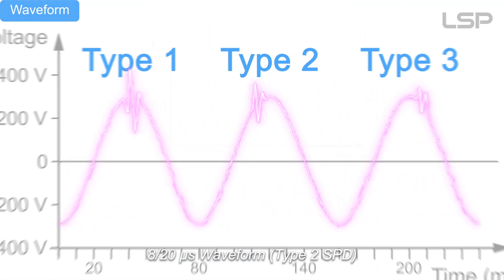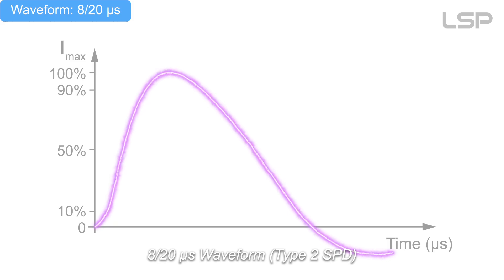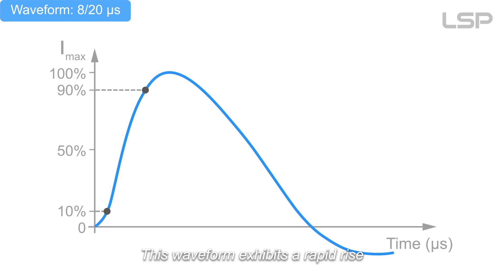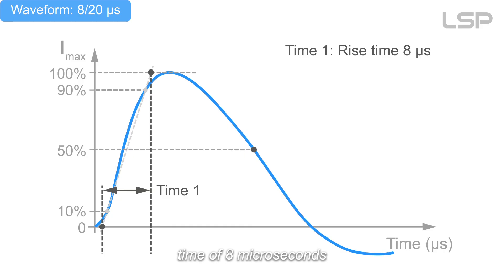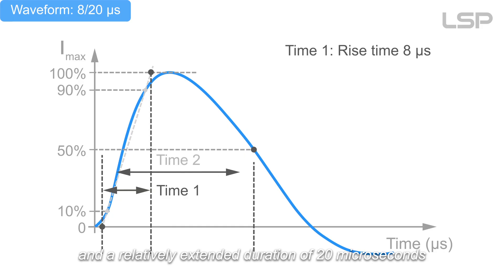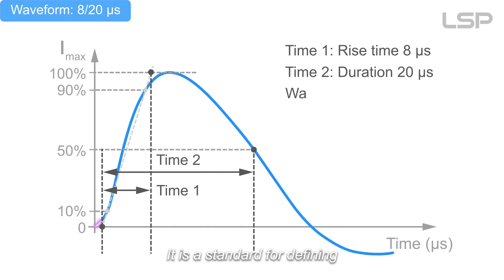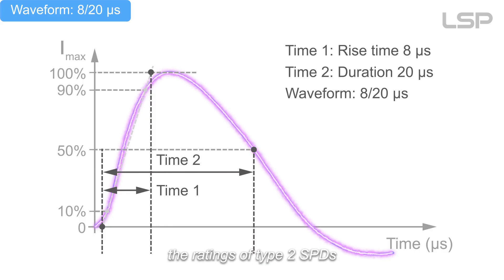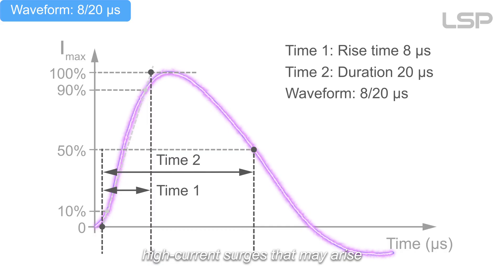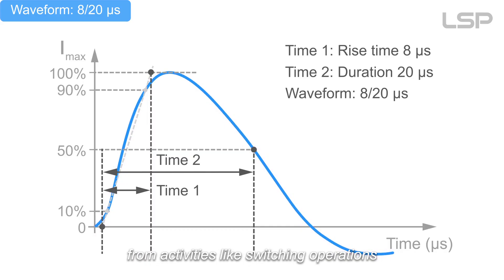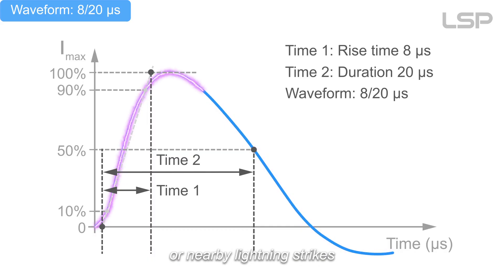The 8/20 microsecond waveform is the standard for Type 2 SPDs. This waveform exhibits a rapid rise time of 8 microseconds and a relatively extended duration of 20 microseconds, and is a standard for defining the ratings of Type 2 SPDs. These devices are engineered to protect against fast-rising, high-current surges that may arise from activities like switching operations or nearby lightning strikes.